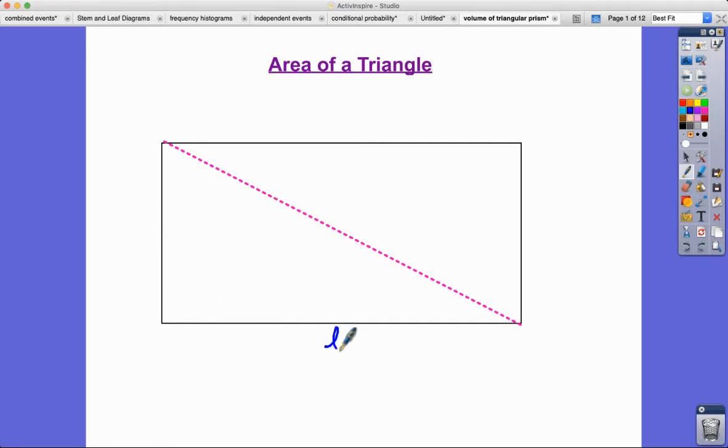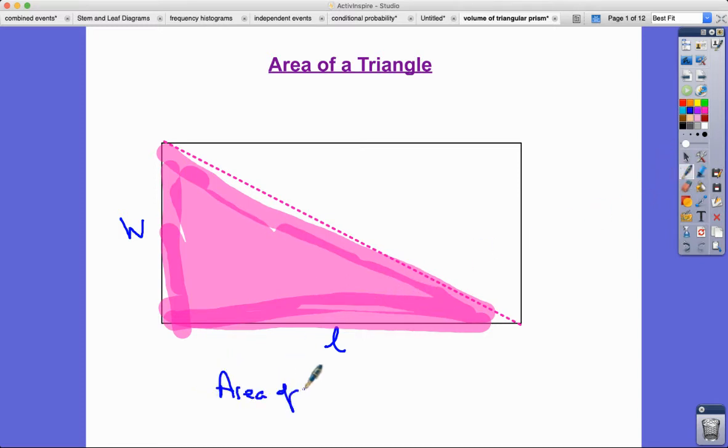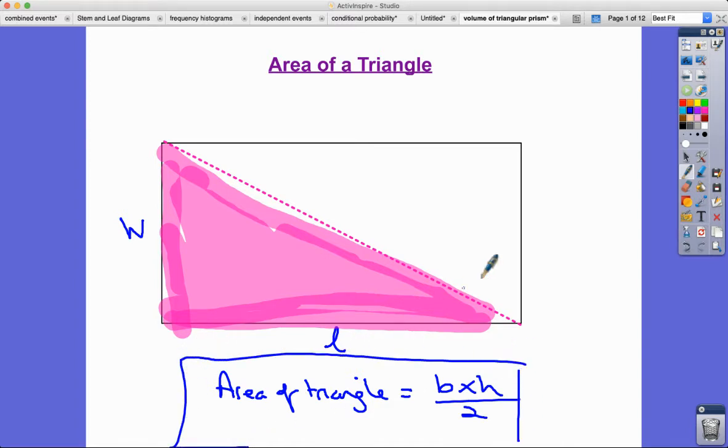If we were going to find the area of this rectangle, we'd be doing length multiplied by width. But how about if we just wanted to find the area of the triangle, i.e., half of that rectangle? What we'd be doing then is finding the area of the whole rectangle and then dividing it by two. The area of a triangle formula is base times height divided by two.